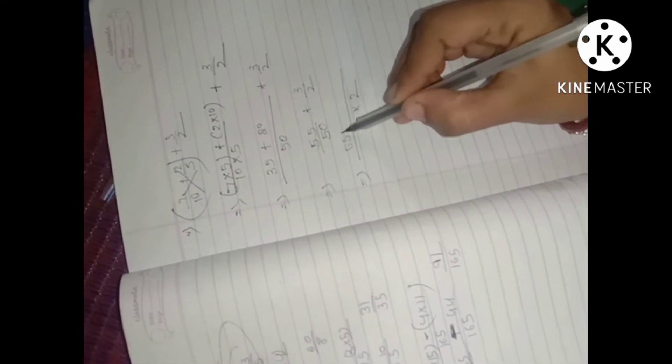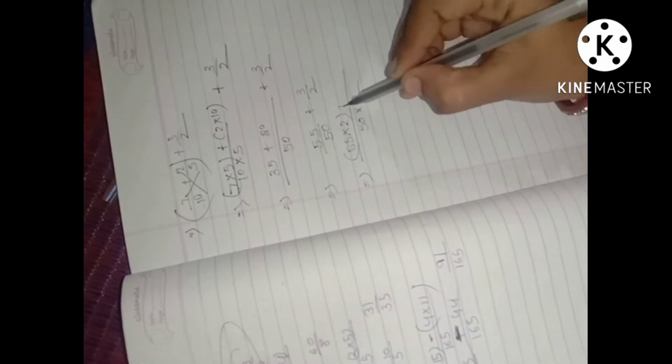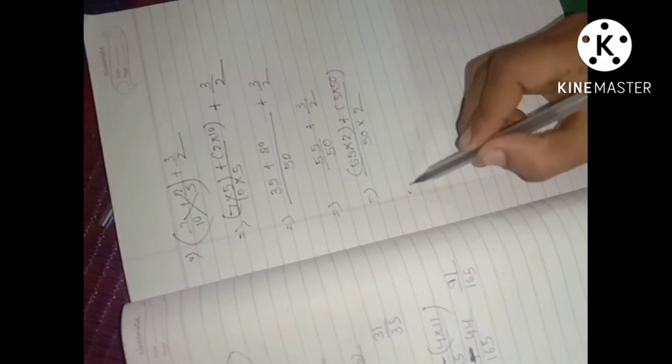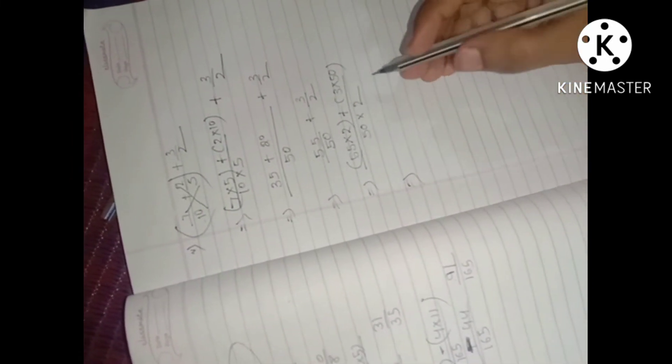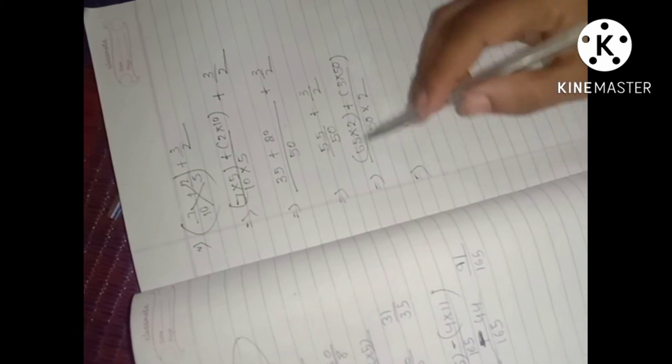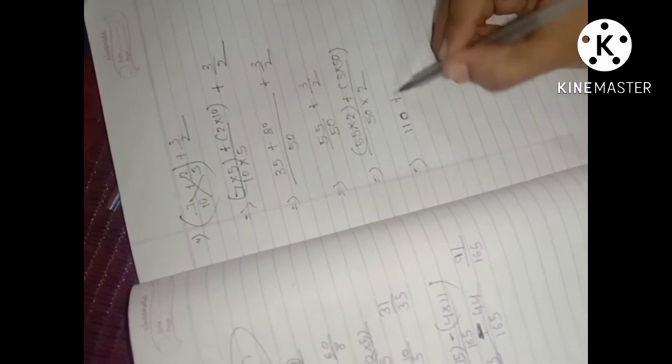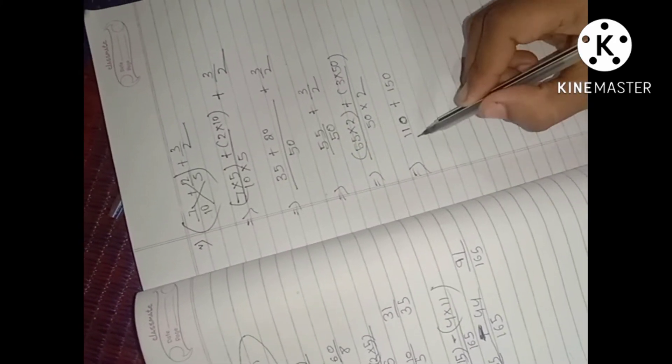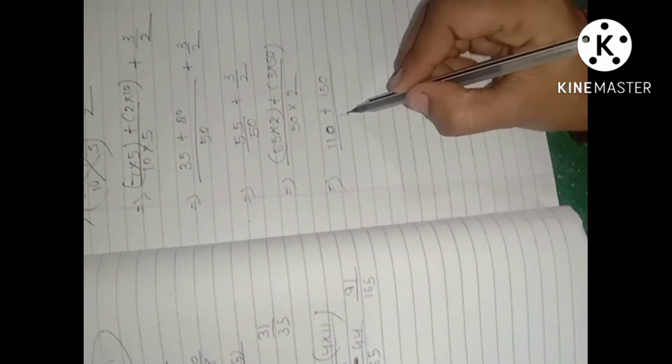15, 5 into 2 plus 3 into 50. So this answer is 5, 5 into 2. 2 times 5 is 10, 0 is 1 carry. 2 times 5 is 10, now 1 is 11 plus 3 into 50. So 1 is 50, 52 is 100.